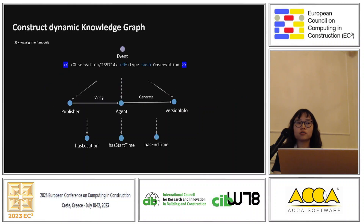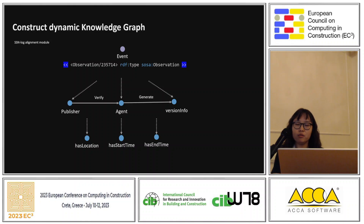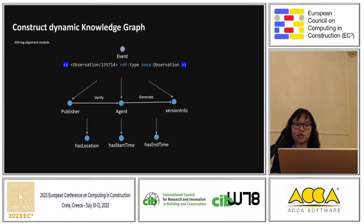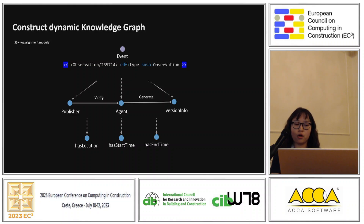To construct the dynamic knowledge graph, we use an alignment module to add contextual data on events. We have the publisher, who is the owner of the event, and also the agent who will verify the published event. The agent will also generate virtual information, and we include location information along with start time and end time for each event.